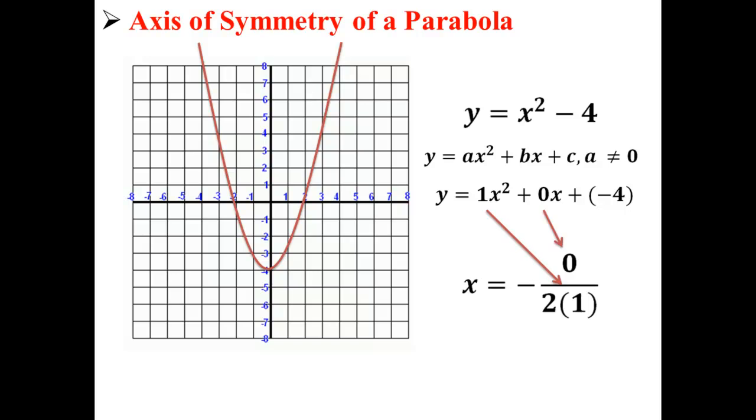So x is equal to negative 0 over 2 times 1, or simply x equals 0. You can see I've drawn an orange line where x is equal to zero. That is our axis of symmetry for this parabola.